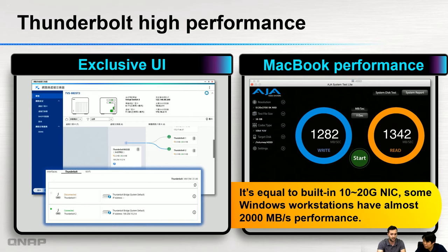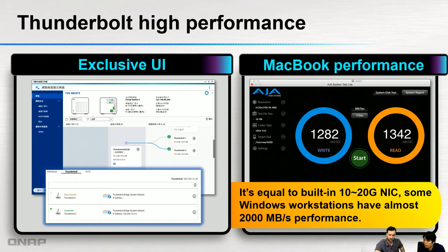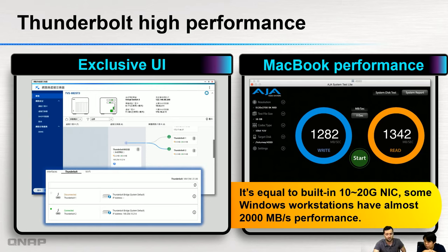The Thunderbolt high-performance interface has an exclusive user interface and we're still talking about Mac performance. We can see it goes to almost 1300 write and 1400 read, but we've seen it reach 2000 megabytes per second on some Windows workstations. Thunderbolt runs on network protocols, and we can reach 1300 to 1600 for Mac users. We tested with 5K resolution at 60 gigabytes of data — a real test. For some Windows workstations it can reach almost 2000. That's really high performance.